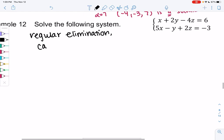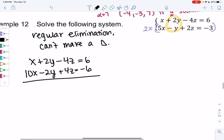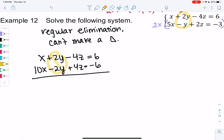The y's look easy to eliminate because they're opposite signs already. x plus 2y minus 4z equals 6. I'll multiply the second equation by 2 to make the y's eliminate. 10x minus 2y plus 4z equals negative 6. The y's cancel out. The z's happen to cancel as well, just a coincidence. We get 11x equals zero, so x is zero.